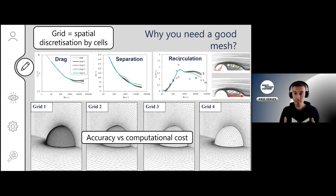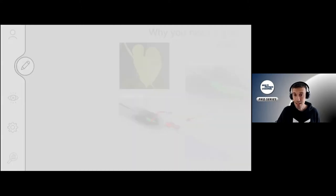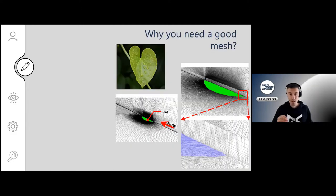There is a big trade-off because the finer you go, the higher your computational cost becomes, which you want to limit at some point. In a past episode of this Pro Series we saw with Richardson extrapolation how you could estimate your meshing error, your discretization error. That's why you need a good mesh and why you have to design it in a good way.